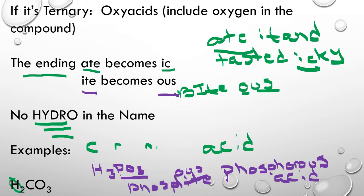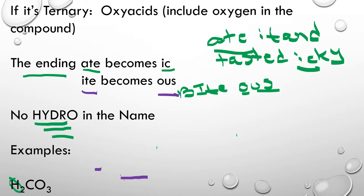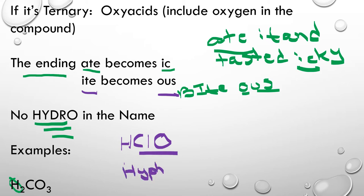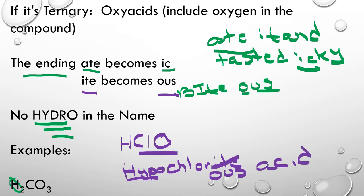Let's look at HClO. We know that we've got a polyatomic here because there's more than one element after the hydrogen. So the name of ClO — we are not going to have hydro in the name — but ClO is called hypochlorite. We're going to change that ending to -ous. Hypo has nothing to do with hydro — totally different word. So it's going to be hypochlorous acid.